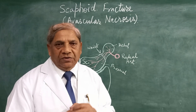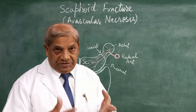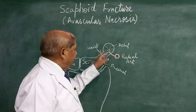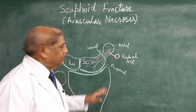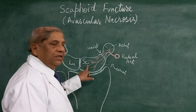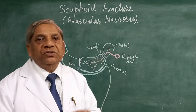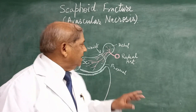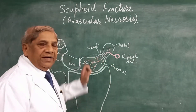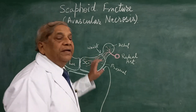The blood supply becomes very diminished and the fusion between the proximal and distal parts is delayed — it may take many weeks to heal. But when the fracture is complete, where the entire waist is fractured due to the fall on the outstretched hand, all the branches passing from the distal part to the proximal part through the waist are destroyed and ruptured. As a result, the blood supply to the proximal part — the large part of the scaphoid articulating to form the wrist joint with the radius — is cut off, leading to necrosis.